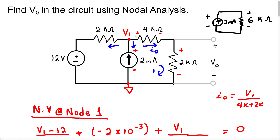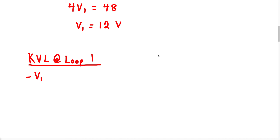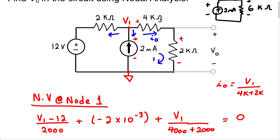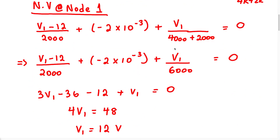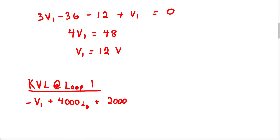Continuing to walk around the loop, we enter the positive terminal of the 4K resistor. Even though we don't know the exact voltage across it, we drew in current I0, and we use Ohm's law — current times resistance — to represent the voltage. So we write plus 4,000 times I0. As we continue, we enter the positive terminal of the 2K resistor. The same current I0 flows through it because these resistors are in series, so we write plus 2,000 times I0.